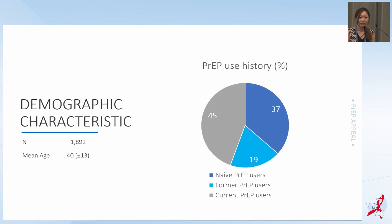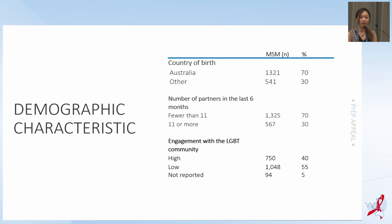In total, we included 1,892 participants; the mean age was 40. 45% of the participants were current PrEP users, 37% were PrEP-naïve users, and 19% were former PrEP users. The majority were born in Australia and had fewer than 11 sexual partners in the last six months. About half of the participants had high community engagement and the other half had low community engagement.